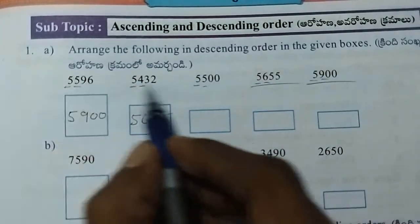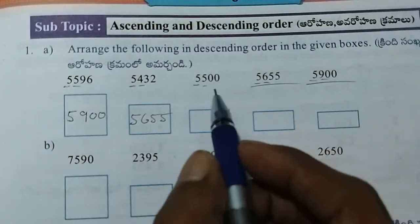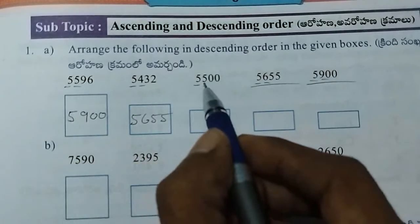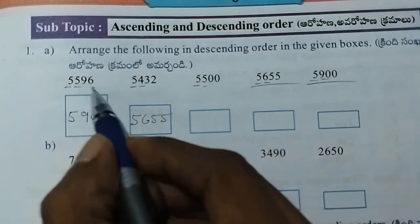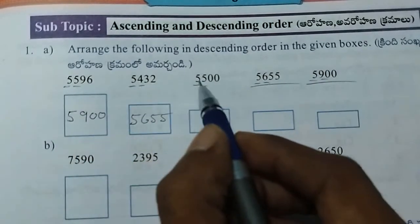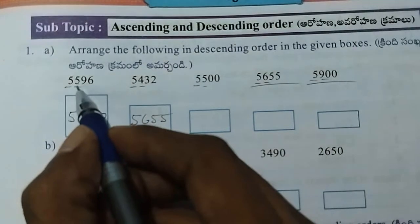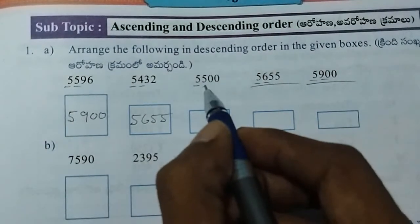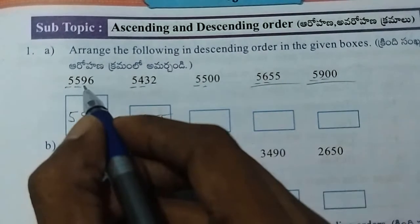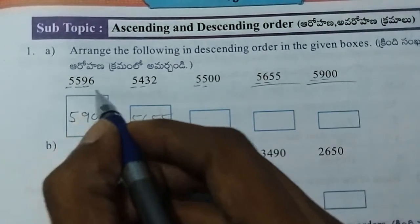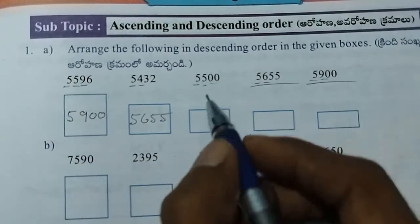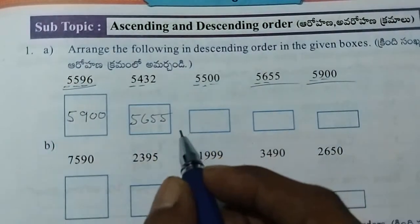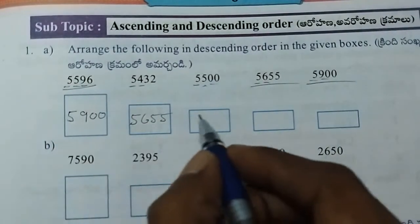Next, from the remaining 3 numbers, choose the big number. The 100s digits are 5 and 4 and 5. For the two with 5, check the 10s place: 9 and 0. So the big number is 5,596.